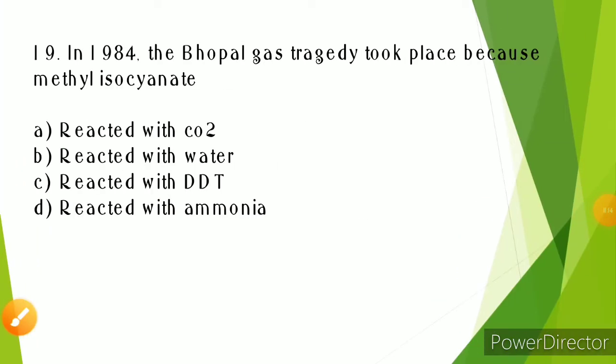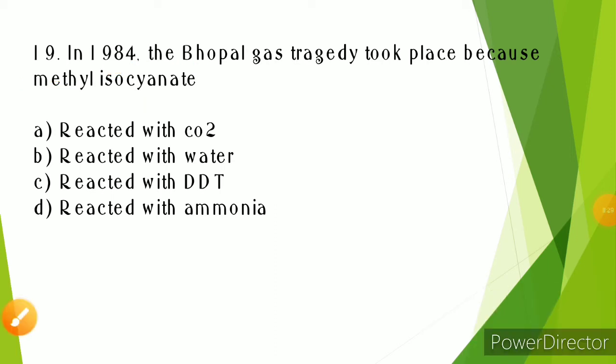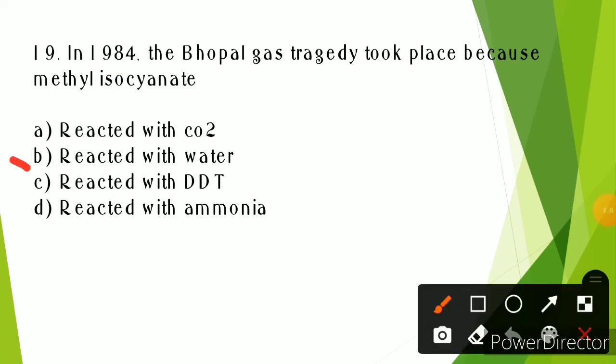In 1984, the Bhopal gas tragedy took place due to methyl isocyanate. But why did it react? Because it reacted with water. The reaction was an exothermic reaction, and due to this, a lot of heat was produced. The heat increased the pressure, and because of the increasing pressure, the septic tank burst.